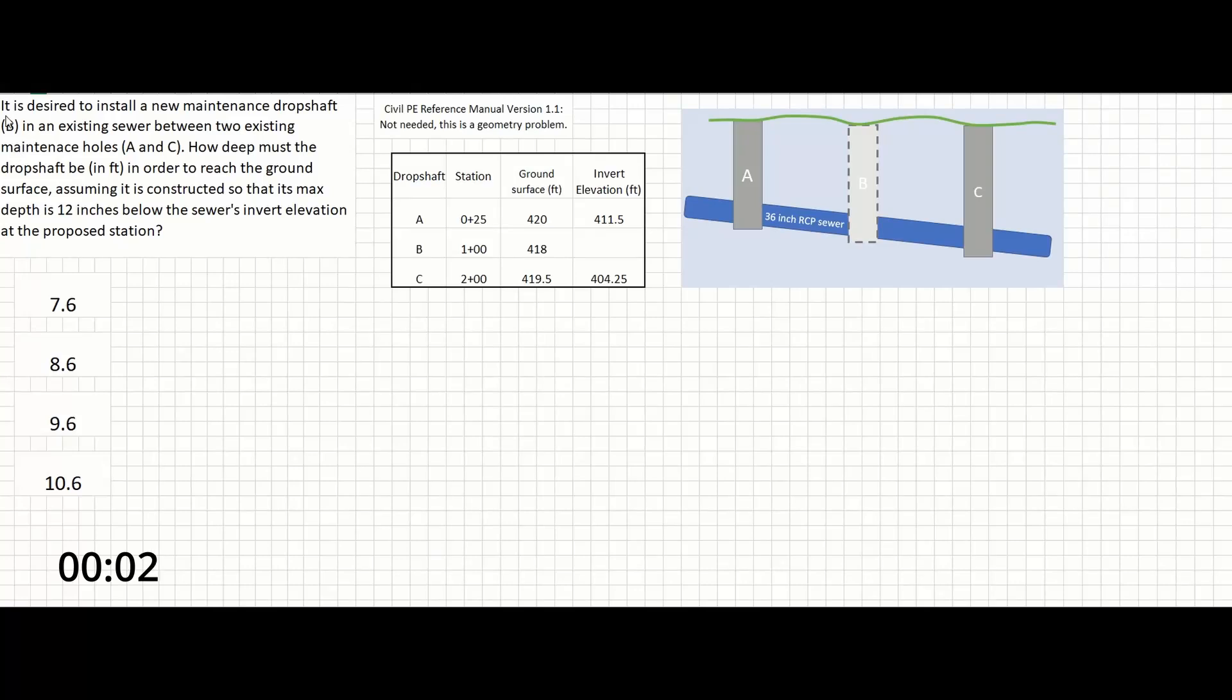In this problem, it is desired to install a new maintenance drop shaft B in an existing sewer between two existing maintenance holes A and C. How deep must the drop shaft be in feet in order to reach the ground surface, assuming it is constructed so that its max depth is 12 inches below the sewer's invert elevation at the proposed station?